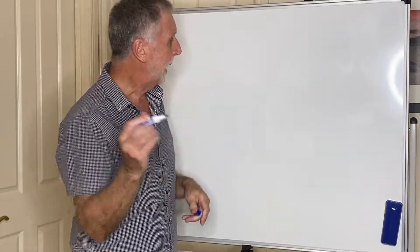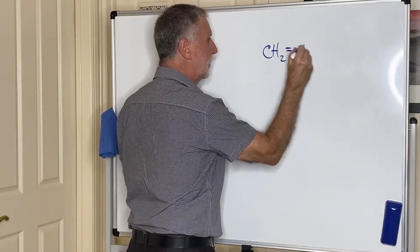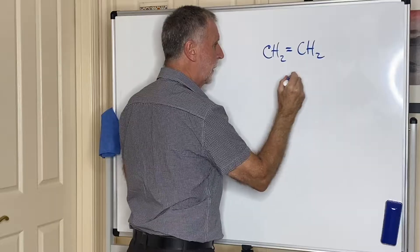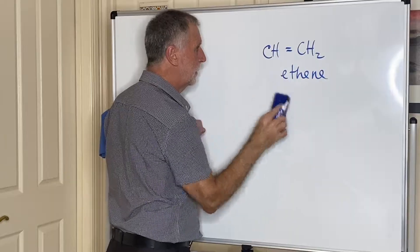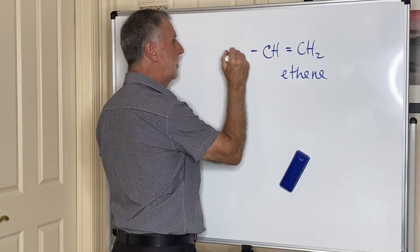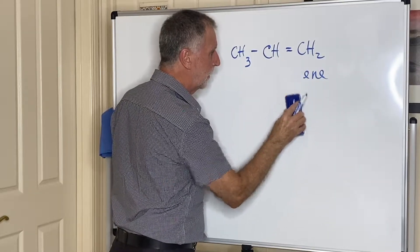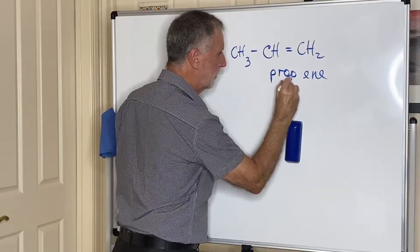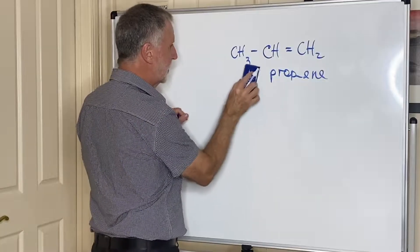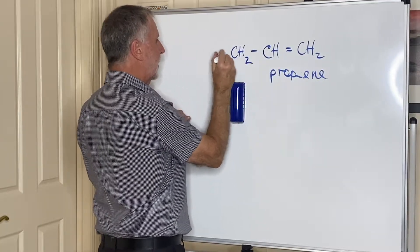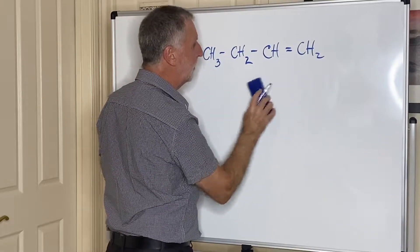Alkenes are the same in terms of naming. So if I had for example this here, that would be ethene, and if I put a methyl group there then I now make propene. If I do this and add another carbon here I've now made butene.